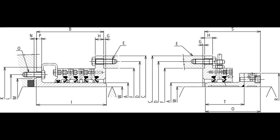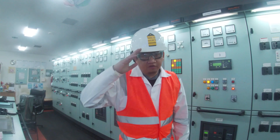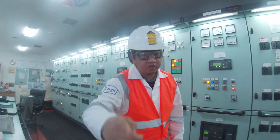Normal arrangement of stern tube seals: aft stern tube seals and forward stern tube seals. Thanks for watching — please like our video and don't forget to subscribe to keep notified of our latest videos.